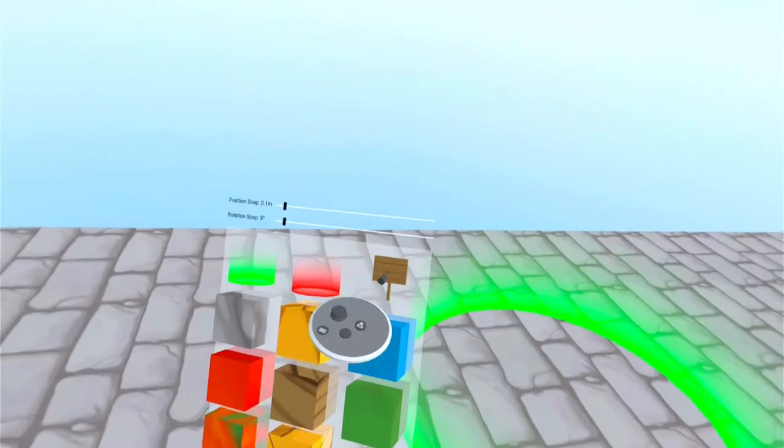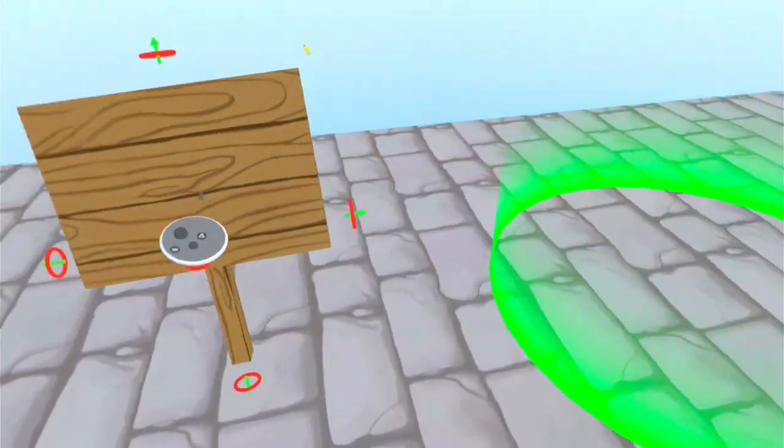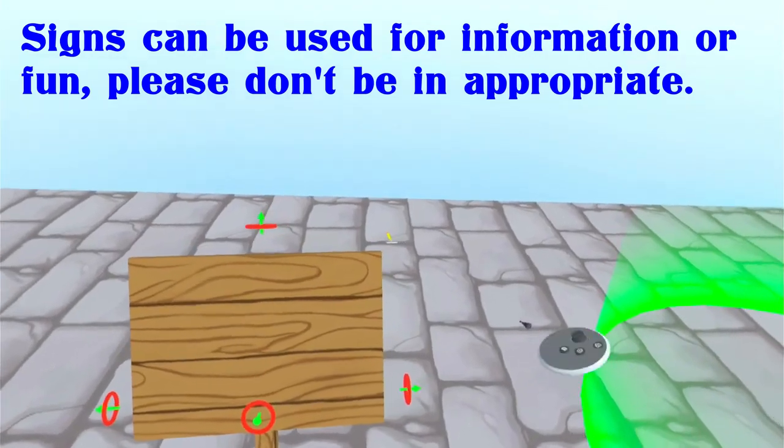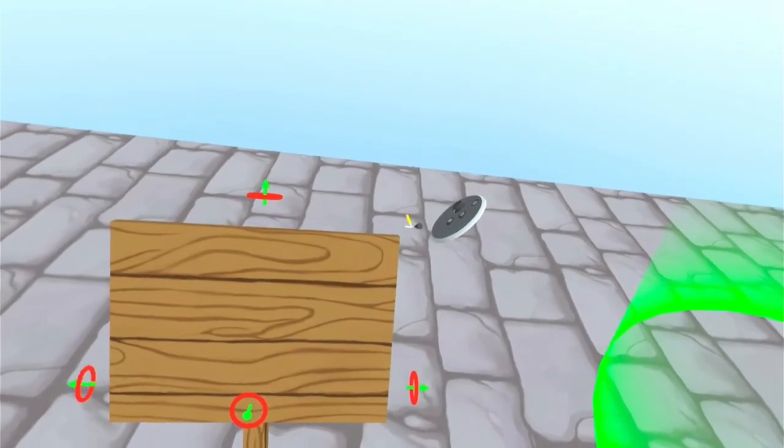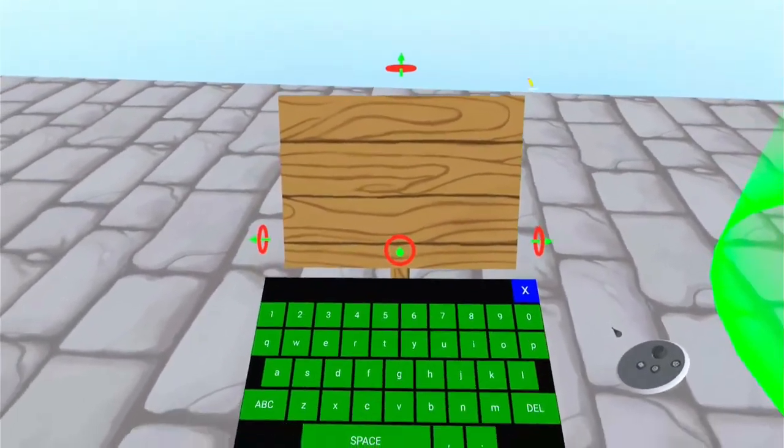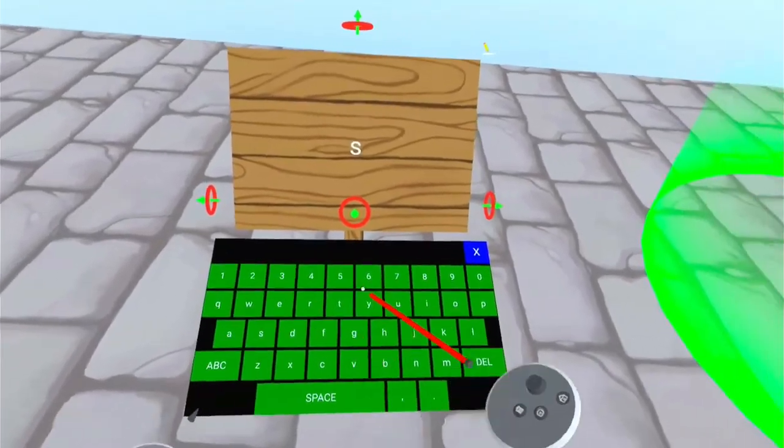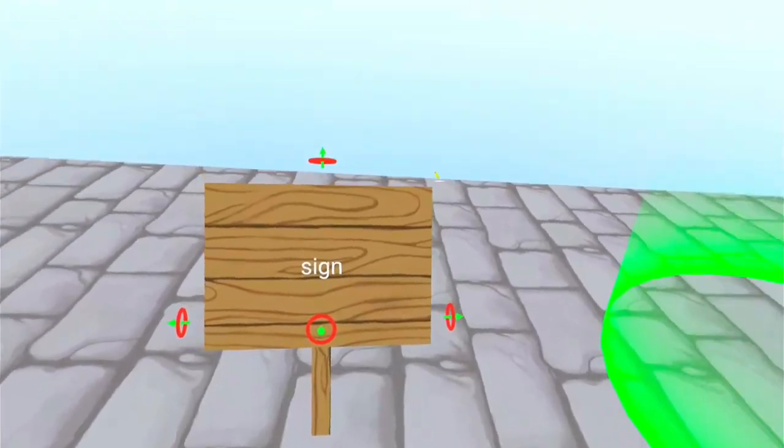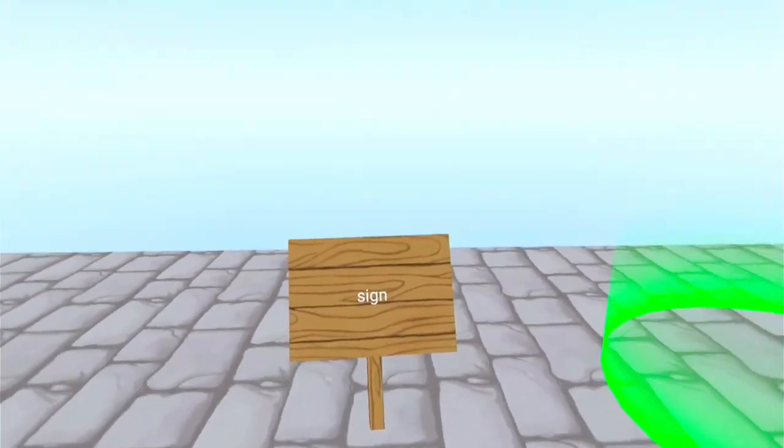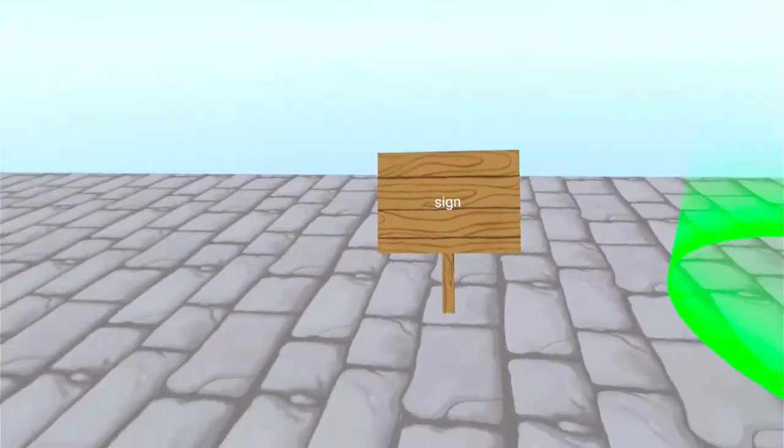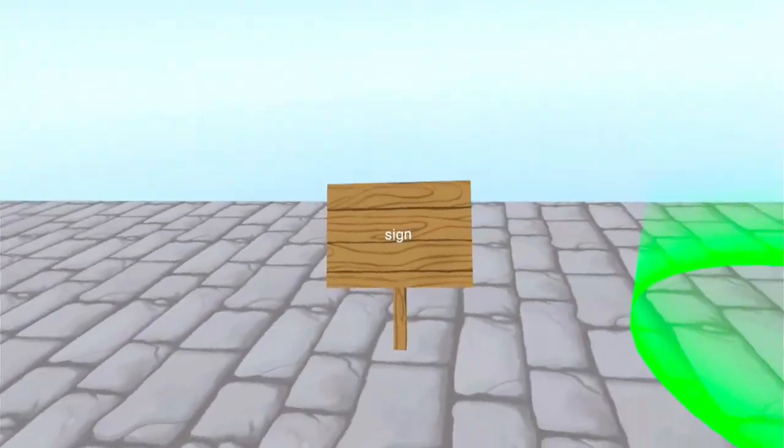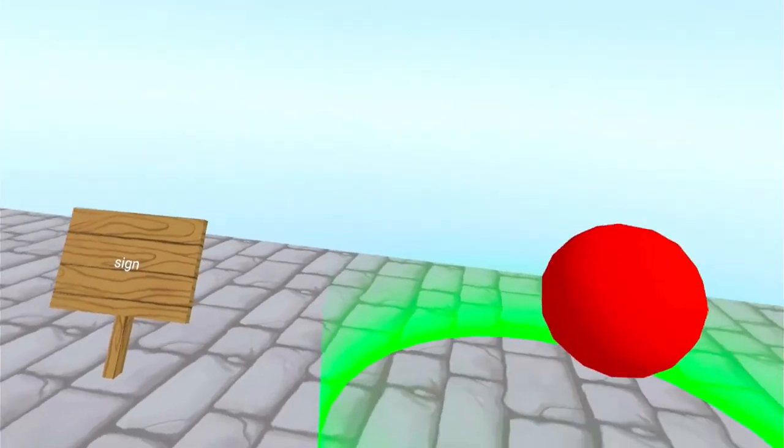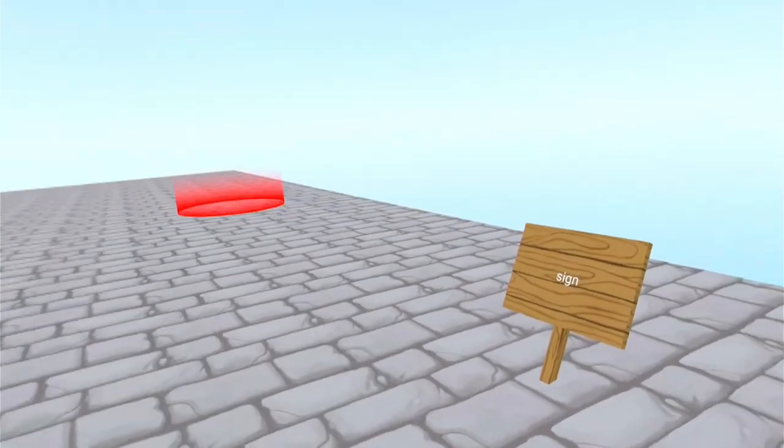I almost forgot one thing, though. On our menu, we have signs. Signs are cool. You throw a sign down, and just like the other, you see the pen and the paper. You click on that. It brings up a keyboard. It's a sign, and it's there. You can write whatever you want on signs. I would keep it clean, though. Now, I'm going to put together a quick level and show you how to verify and save it.